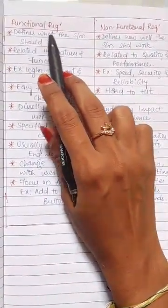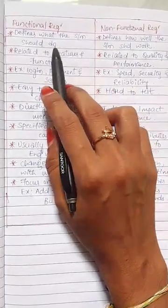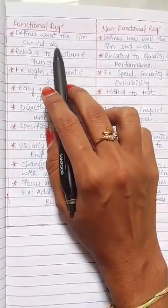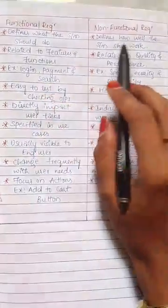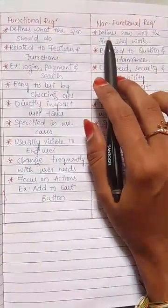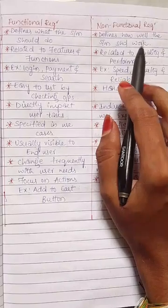The functional requirement defines what the system should do, what exactly the system should do. The non-functional requirement defines how well the system should work.